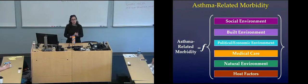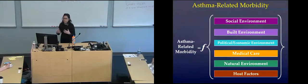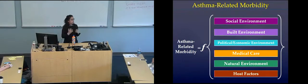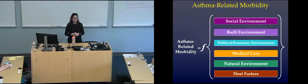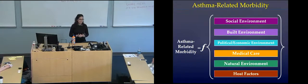Those factors include the social environment — issues related to poverty, crime, and security. The built environment — housing quality, road and city quality. The political and economic environment — things like the availability of health insurance, especially for children with asthma exacerbations. The natural environment, such as whether we live in a valley versus on a hill. And host factors — genetic predispositions and behavioral or inherited exposures. One of the major questions in asthma-related morbidity, as in many chronic diseases, is if these are all important, how do we figure out where to intervene?